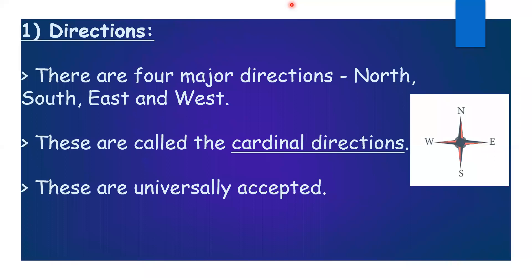Let's start from directions. There are four major directions: north, south, east and west. These are called the cardinal directions. These are universally accepted. Countries all over the world use the same system of directions, and all maps follow the same system of showing directions. The top part of the map is north, the bottom part is south, to the right is east, and to the left is west.